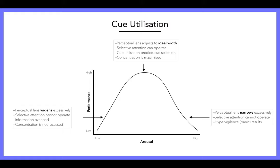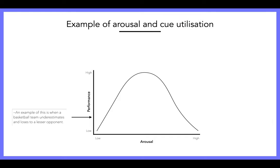At low arousal, an example is when a basketball team underestimates and loses to a lesser opponent. They're not really motivated for the game — distracted by the crowd, not really tracking where their opponents are going, just taking in too much information due to under-arousal. At optimal arousal, an example would be a basketball player playing really well: making consistent successful passes, making interceptions, winning rebounds.